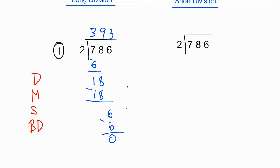With short division we are going to be doing a lot of mental calculations. We won't be doing each single step as in the long division. We divide 7 by 2 — 2 goes into 7 three times. 3 times 2 is 6. Subtract, write down the remainder just before 8, giving you 18. 2 goes into 18 nine times, giving a zero remainder. 2 goes into 6 three times, so your answer is 393.